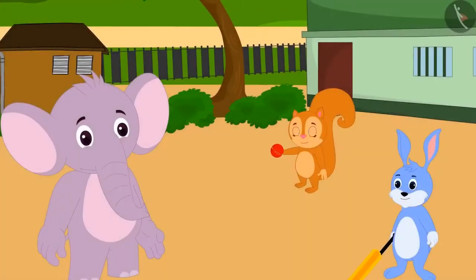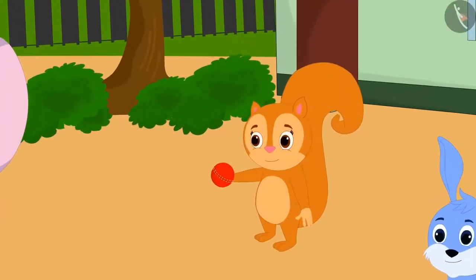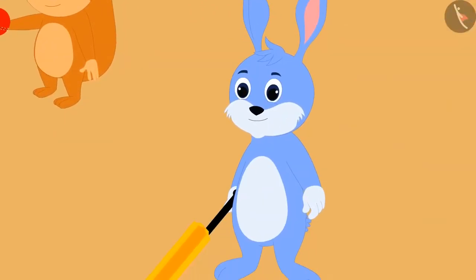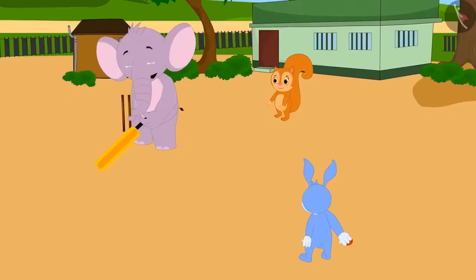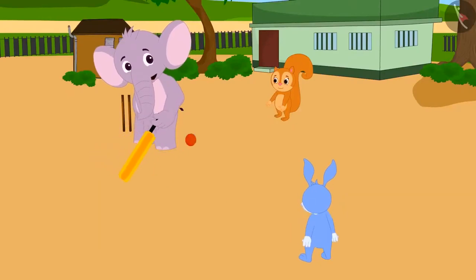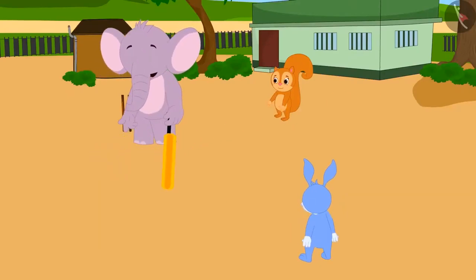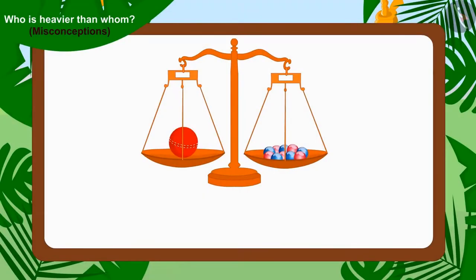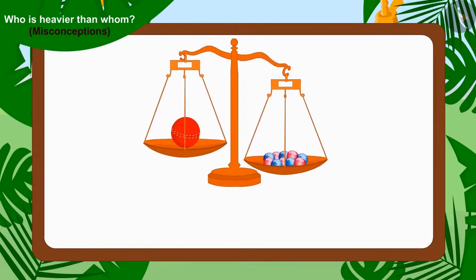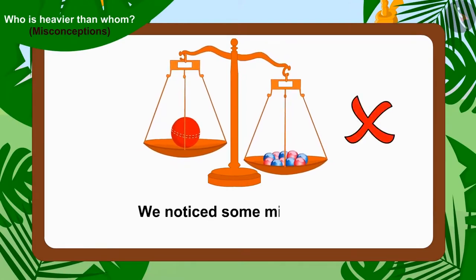Bunny and Appu agreed that the weight of Chanda's one cricket ball is more than Appu's balloon and Bunny's ten marbles. The three found out which game to play — they took Chanda's cricket ball, Bunny brought a cricket bat, and all three played cricket with great pleasure. In this video we learned about some misconceptions related to comparing weight.